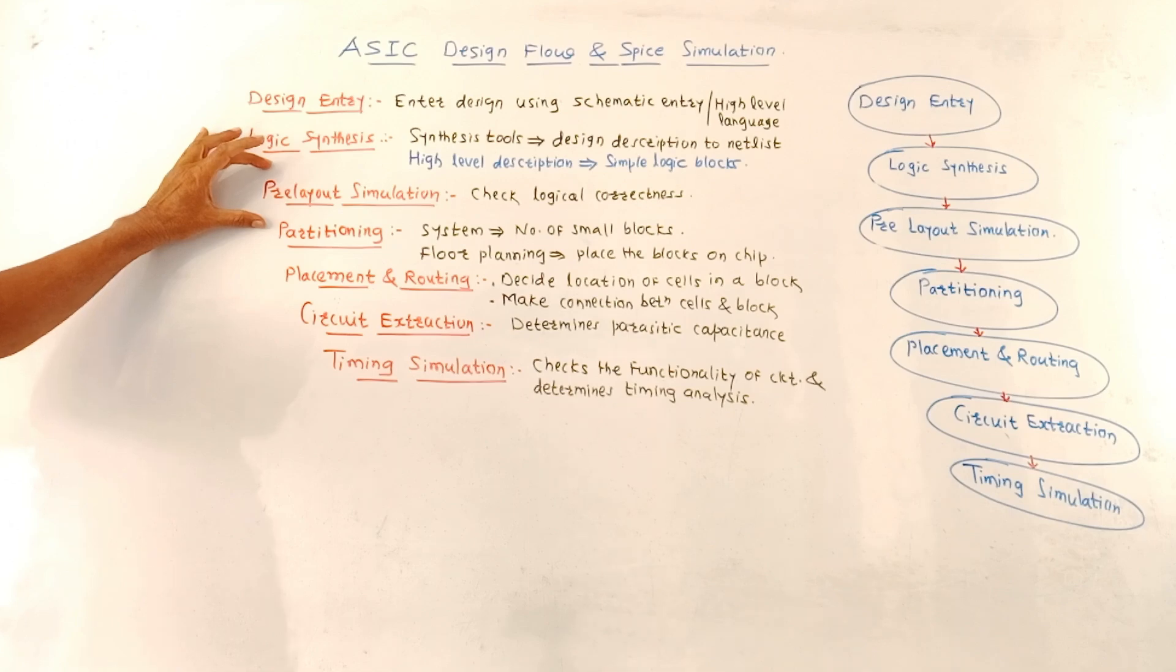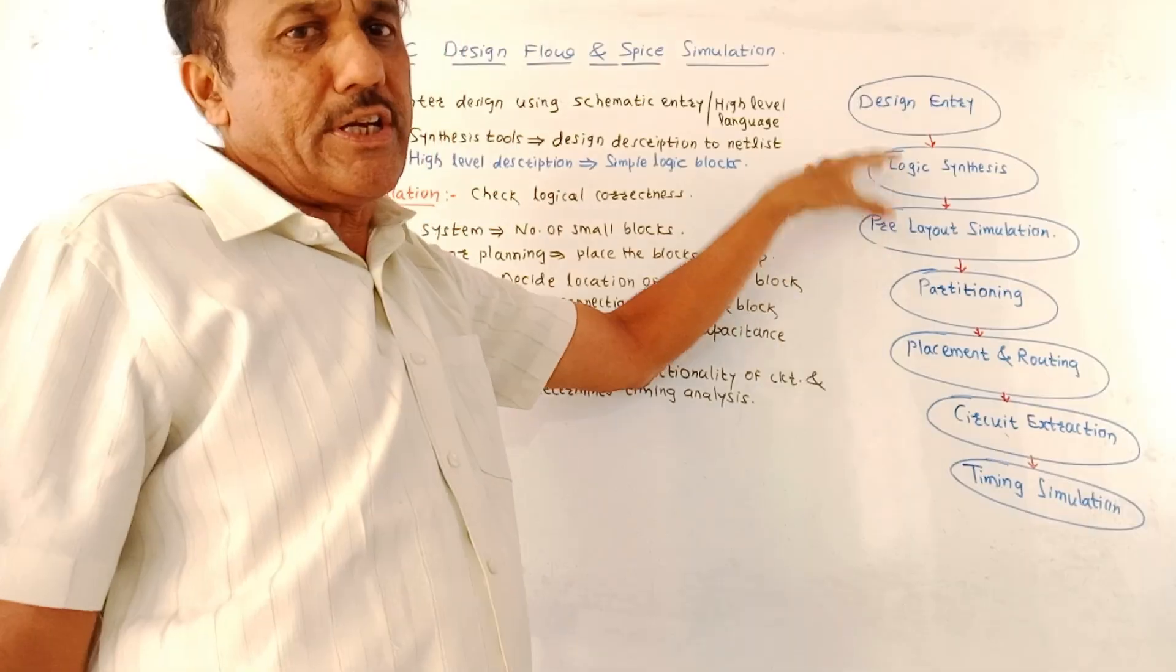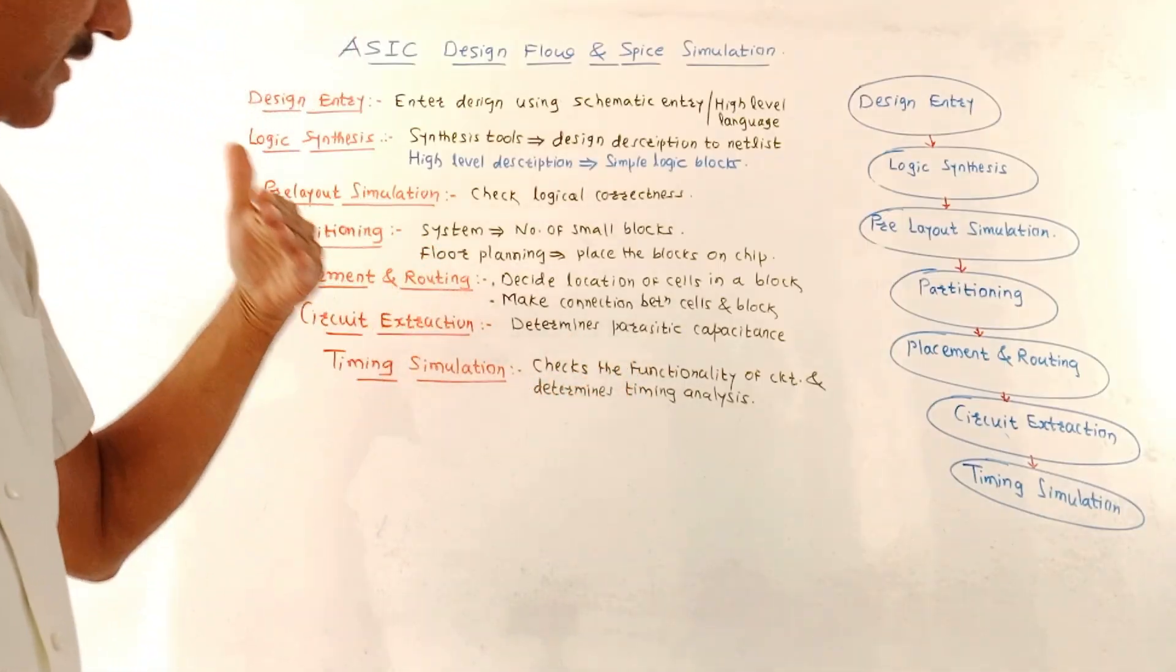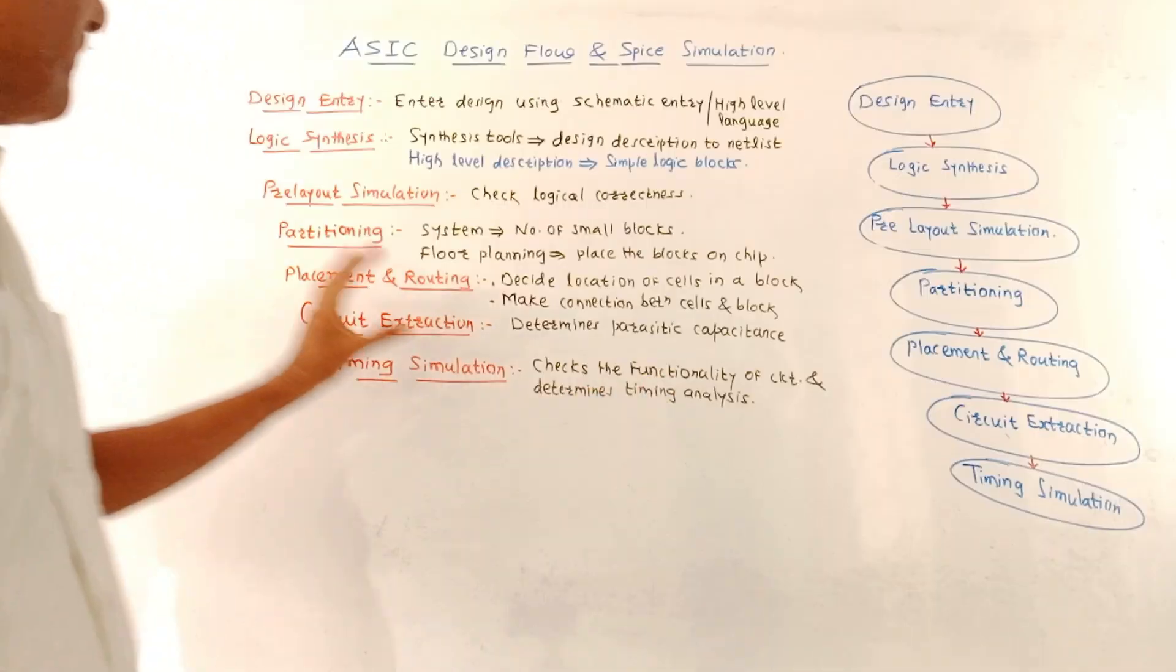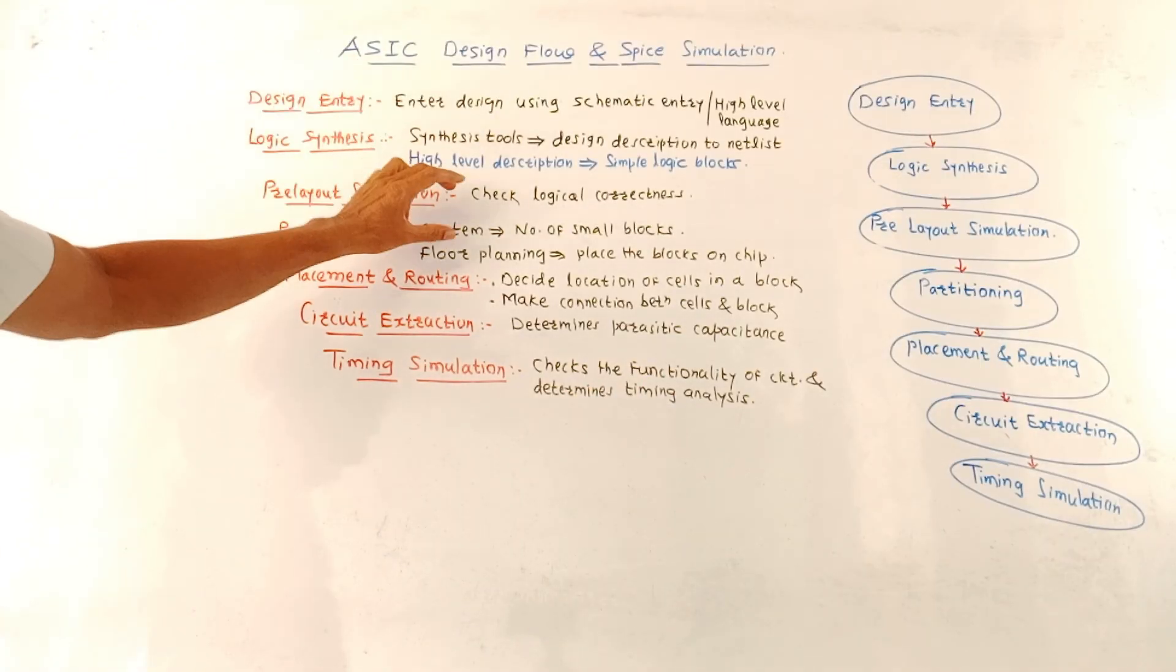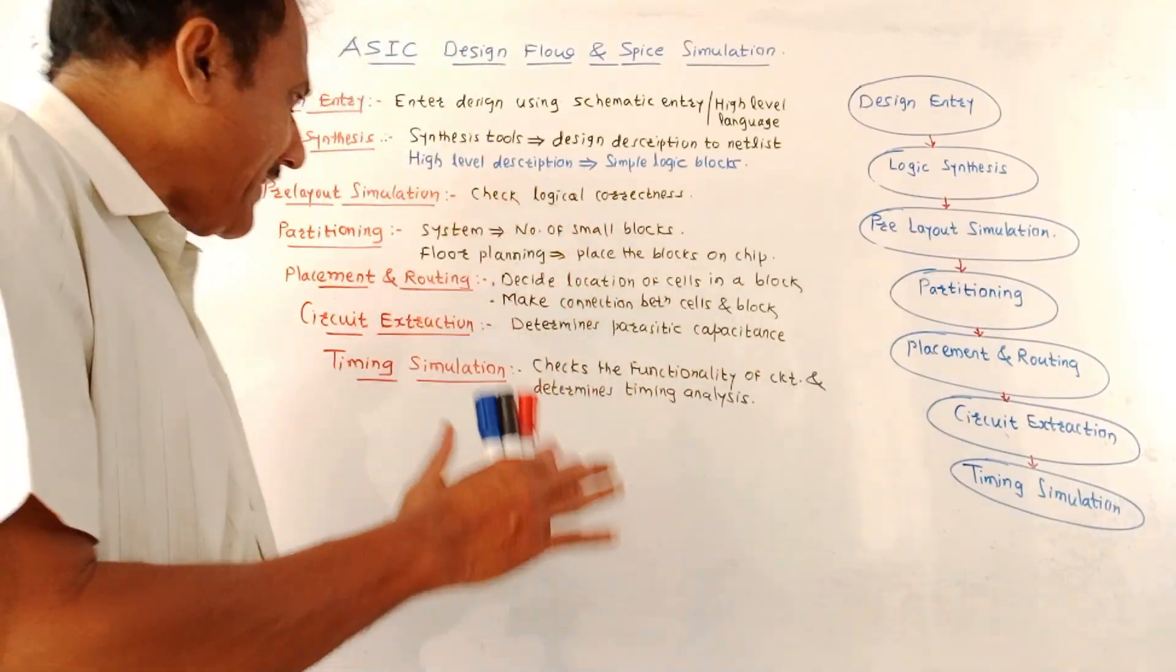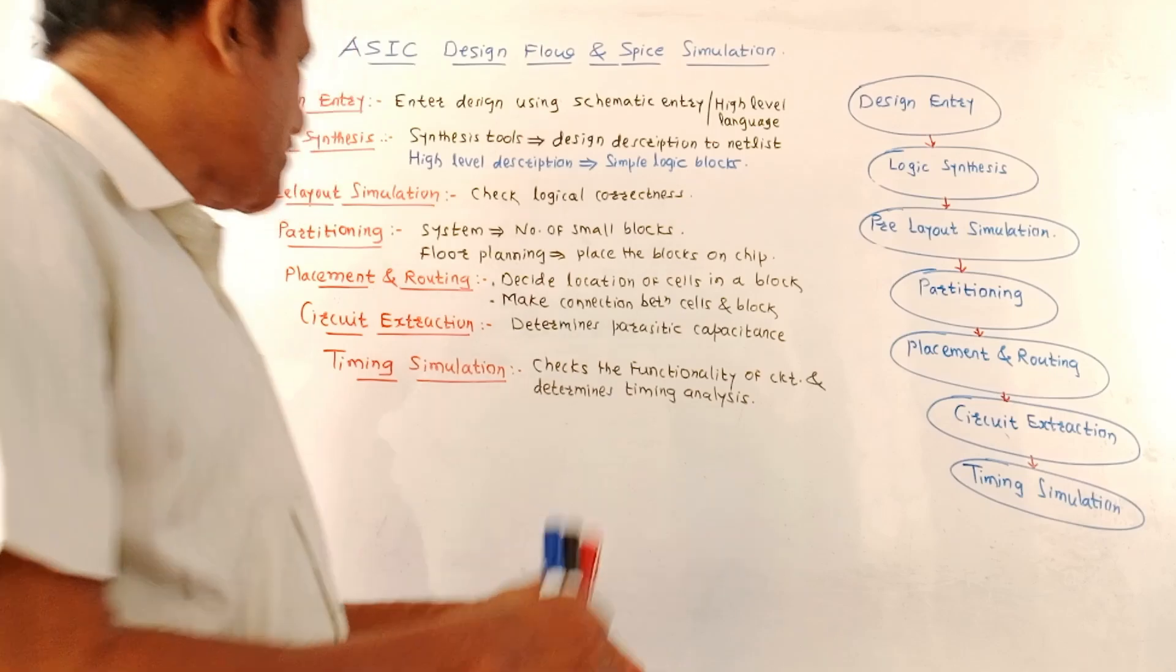Next is the pre-layout simulation. This pre-layout simulation consists of simulation tools which are used for making certain corrections. I mean it first checks the logical connections and it checks for logical correctness. Next is partitioning. As the name indicates, the entire system is partitioned, divided into number of smaller blocks. And then the floor planning is done. Floor planning means the different blocks are placed on the chip.